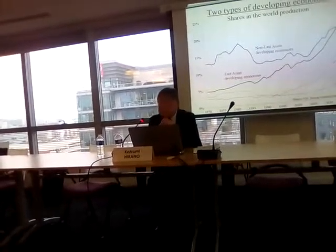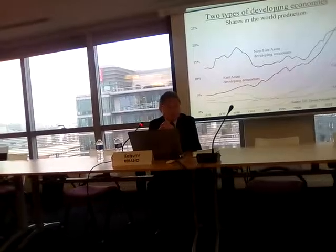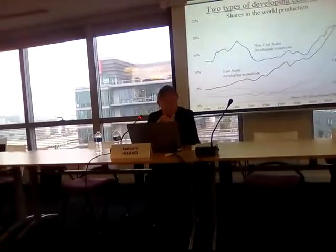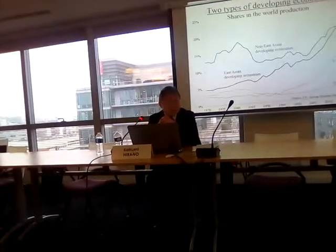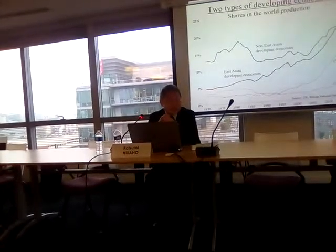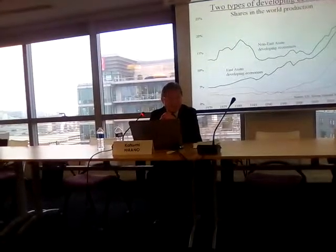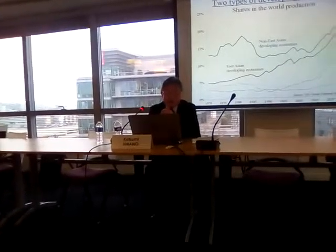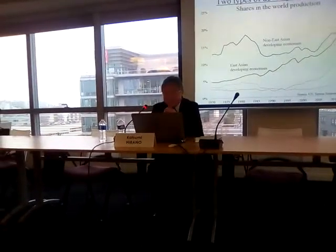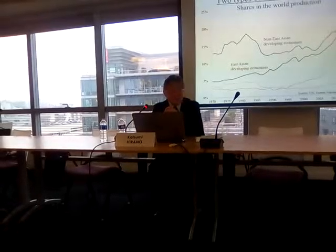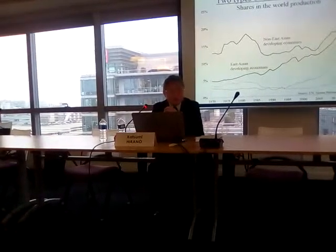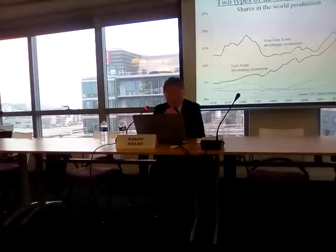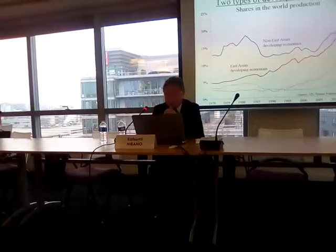The other group is manufacturing product exporters among the developing countries. This type of developing country is almost exclusively found in the East Asian region, but Mexico is also categorized in this type. By 2030, the red line group — manufacturing exporters — exceeds the blue group of natural resource exporters in share.